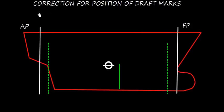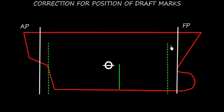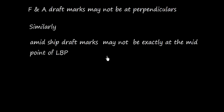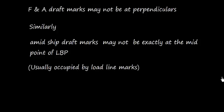We need to apply a correction for the position of draft marks. Here, suppose FP is the forward perpendicular — the draft mark may be located aft of this forward perpendicular. Similarly, the forward and aft draft marks may not be at the perpendiculars, and the midship draft mark may not be exactly at the midpoint of LBP (length between perpendiculars).